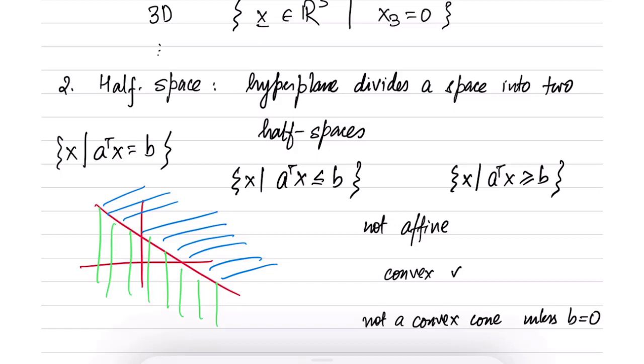Generally half space is not a convex cone unless b equal to 0. So in case b is equal to 0, then it does become a convex cone. So please try to prove this yourself.